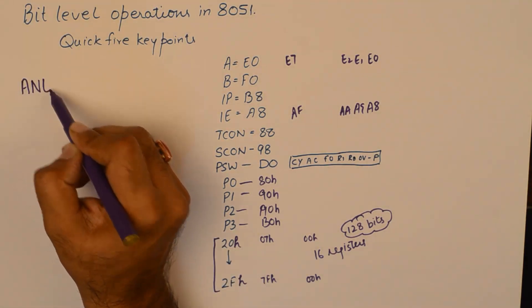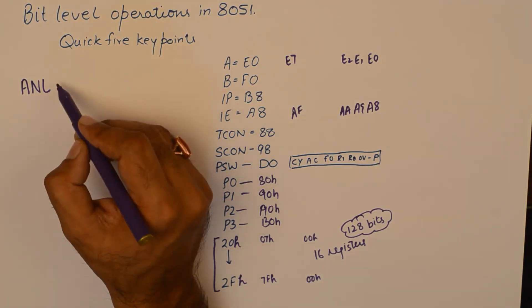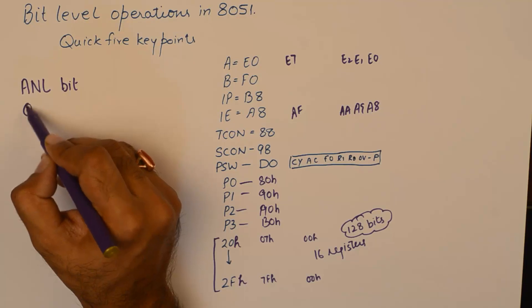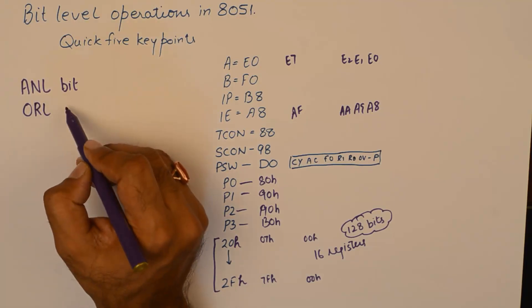So the first instruction is performing logical AND on a bit. Then we could perform logical OR. Then we could clear a bit.